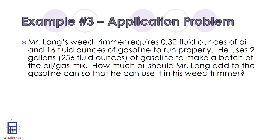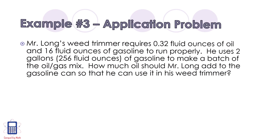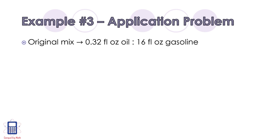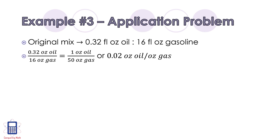So let's check out this application problem. Mr. Long's weed trimmer requires 0.32 fluid ounces of oil and 16 fluid ounces of gasoline to run properly. He uses 2 gallons, or 256 fluid ounces of gasoline, to make a batch of the oil-gas mix. How much oil should Mr. Long add to the gasoline so that he can use it in his weed trimmer? So let's take a look at the original mix: 0.32 fluid ounces of oil for every 16 fluid ounces of gasoline. We need to find the value of the ratio, so we divide 0.32 by 16, and we get 1 ounce of oil for every 50 ounces of gas, or 0.02 ounces of oil for every 1 ounce of gas. Now we can use that value to calculate the amount of oil needed.